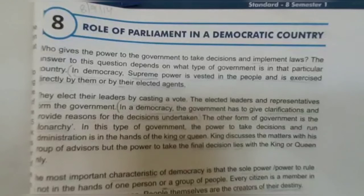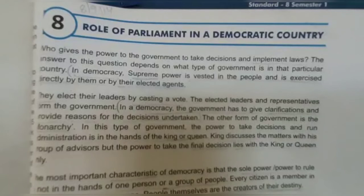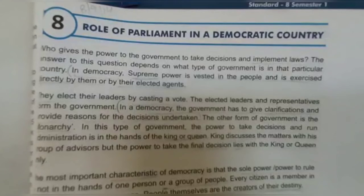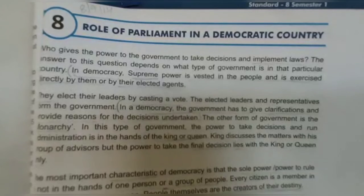When the Parliament session is going on, at the first stage the time for questioning is decided. Members of Parliament ask questions to the ministers of the government. Through these questions, the government gets the chance to know the defects of the administration and the problems and difficulties of the people. It is an important responsibility of MPs to question the government about administrative works. In democracy, the opposition party plays a creative role by finding drawbacks of the programs and policies of the government.